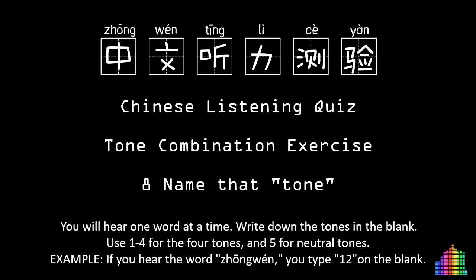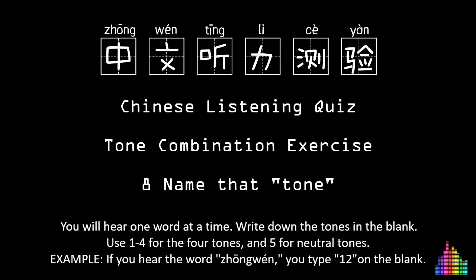Chinese Listening Quiz Tone Combination Exercise 8. Name that tone. You will hear one word at a time. Write down the tones in the blank. Use 1 to 4 for the four tones and 5 for neutral tones. Example: if you hear the word 中文, you write 1 2 on the blank.